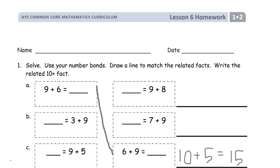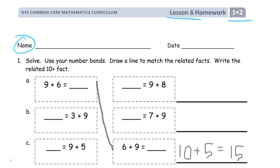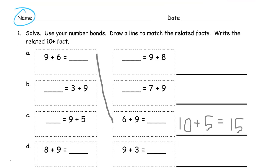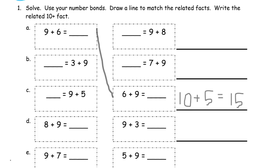Welcome to the homework for lesson six. This is grade one, module two. Write your name first. We're solving and using number bonds, matching up related facts and writing related ten-plus facts. It's kind of putting together all the things we've been doing the last week or so.